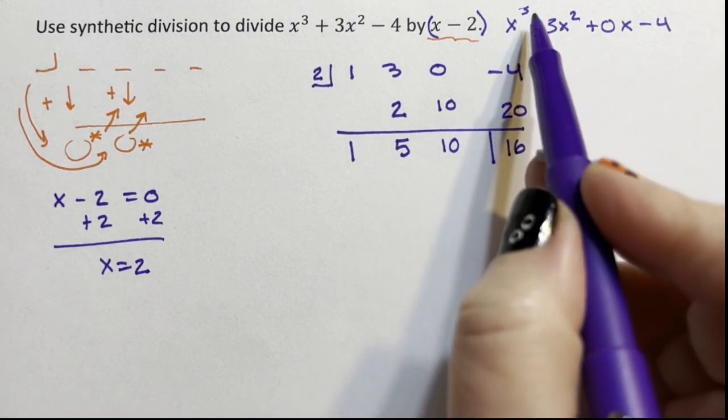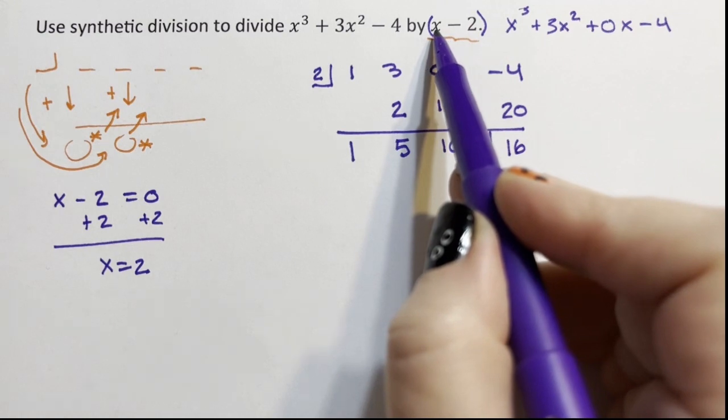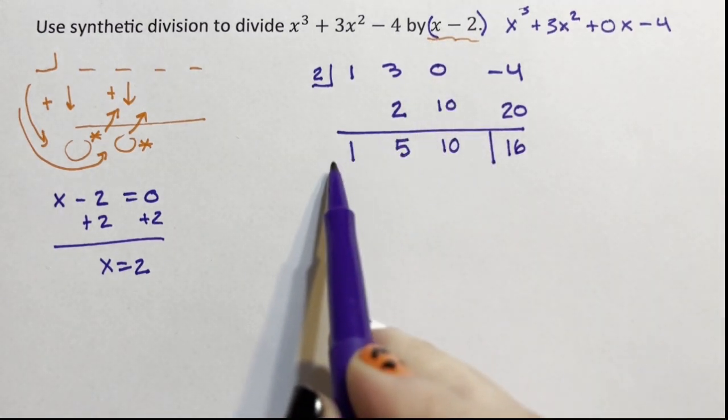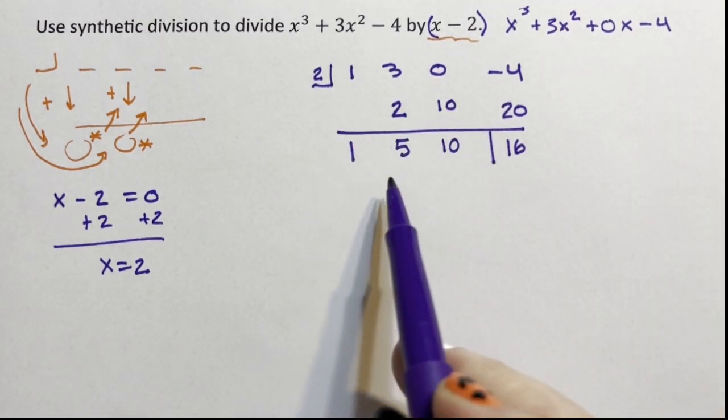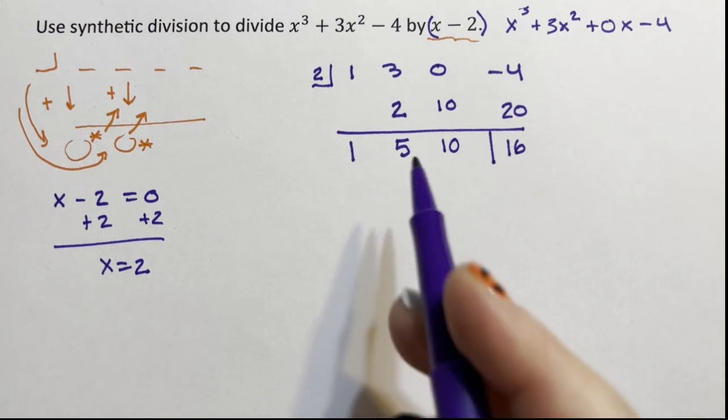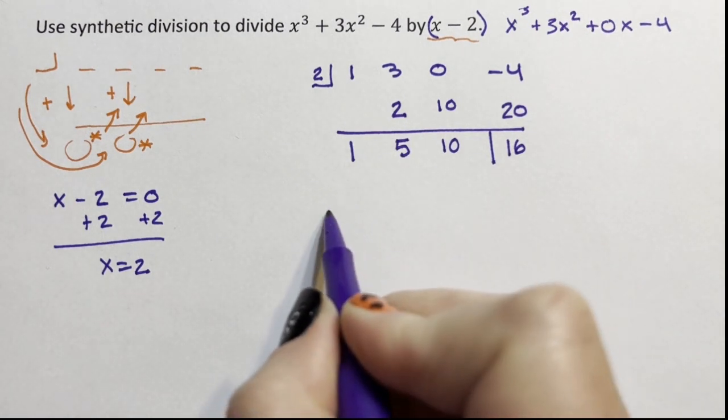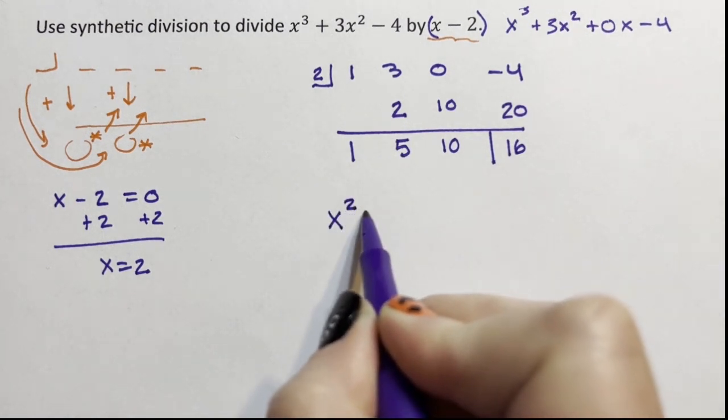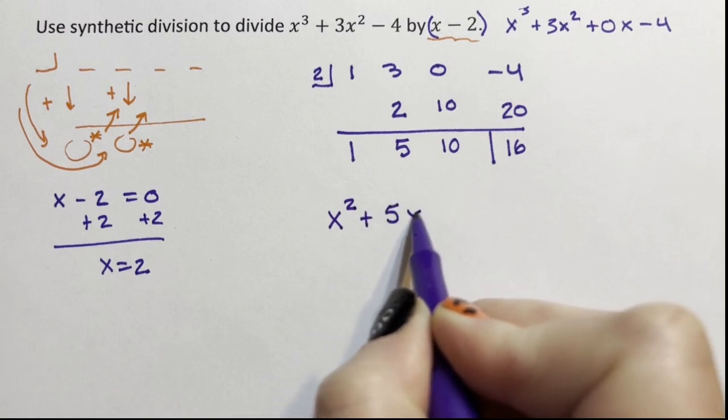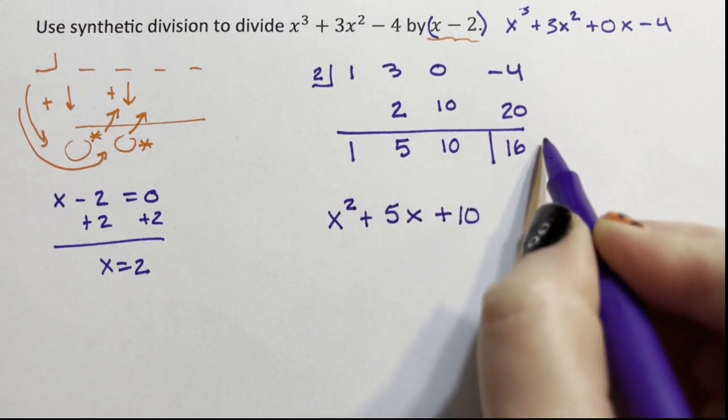So what does this all mean? If this is a cubic, if we divide a cubic by an x, our resulting polynomial will be a squared. So that means our solution is x squared plus 5x plus 10, but we have a remainder.